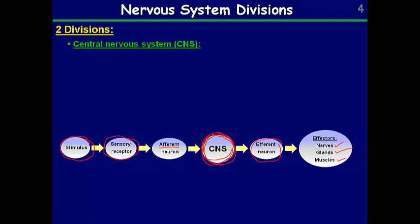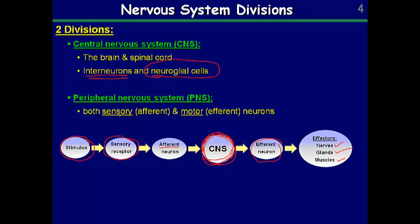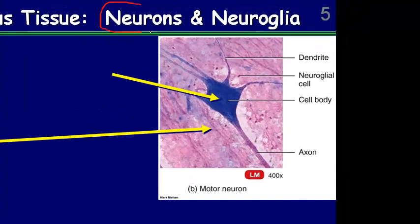The nervous system has two primary divisions: the CNS, which is brain and spinal cord, and the PNS, which is everything else. The central nervous system contains primarily interneurons as well as neuroglial cells, which are supporting cells we'll talk about in our next video. The peripheral nervous system consists of these afferent and efferent neurons sending information into or away from the central nervous system. In the next mini lecture, we'll learn about neurons versus neuroglial cells, the supporting cells of our nervous system.